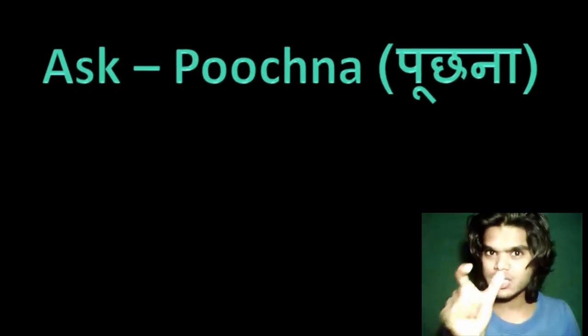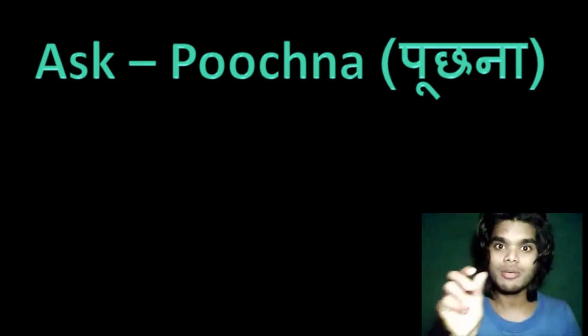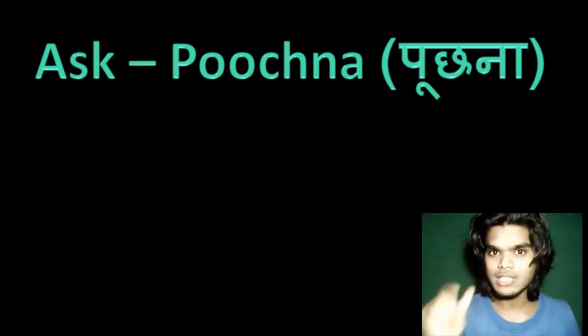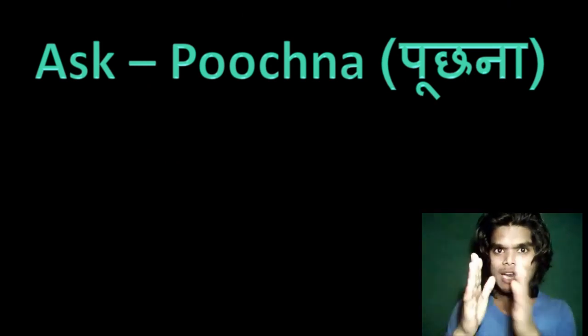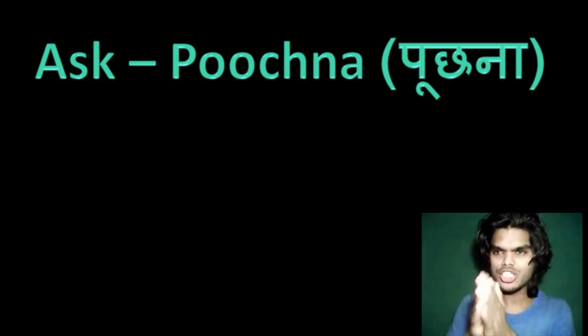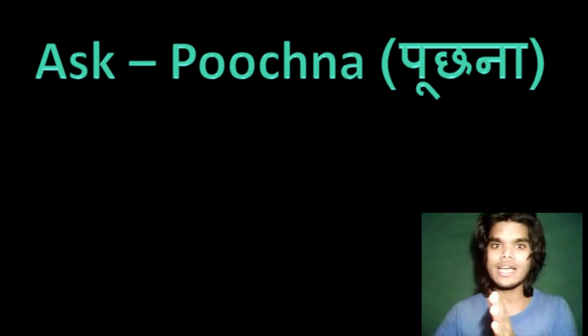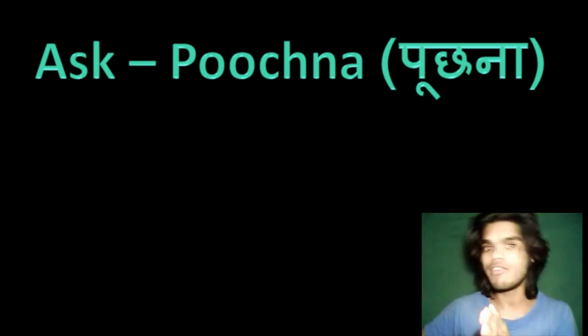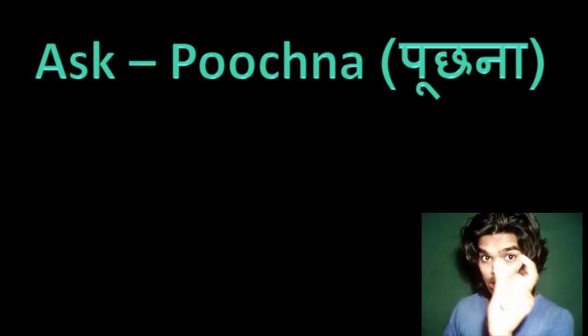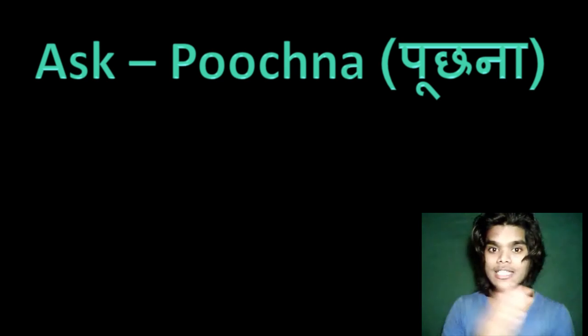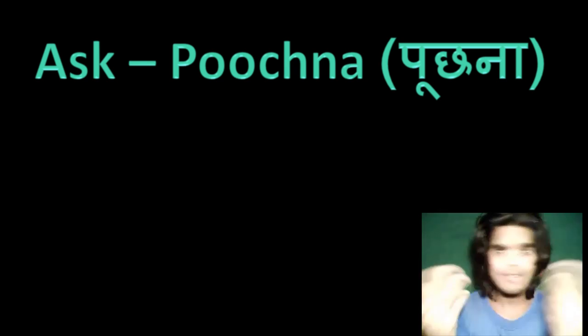Ask me what do you want to ask? We say 'pooch na' — 'pooch' is the root form of the verb 'to ask.' It's the root and after that you can add any suffix to make different forms of the verb. So 'pooch' is the main root verb — always keep that in mind. Let's make some sentences with this verb.